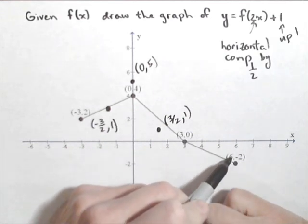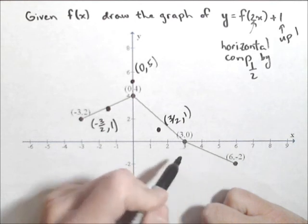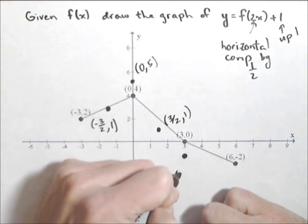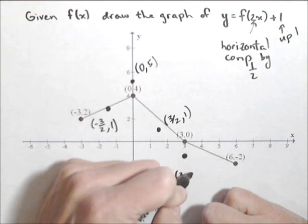And our last point, the 6 gets cut in half, so it goes to 3. The -2 gets bumped up 1. So we are going to move to the point (3, -1).